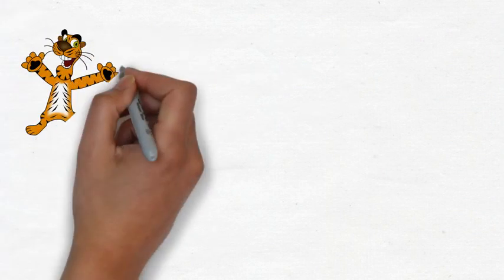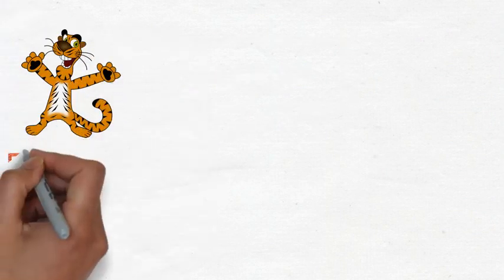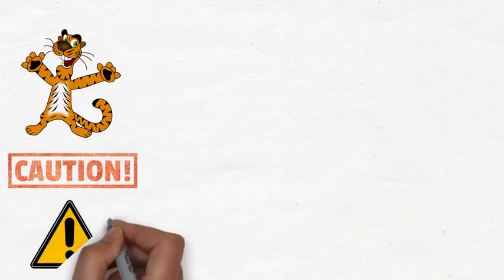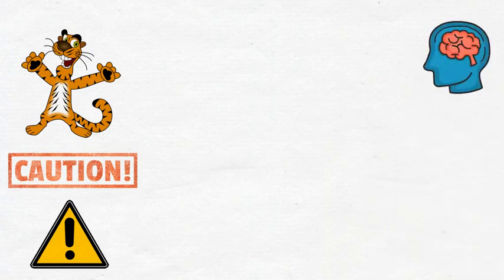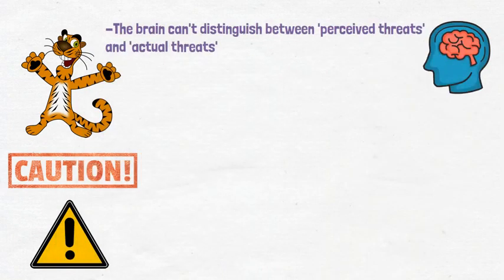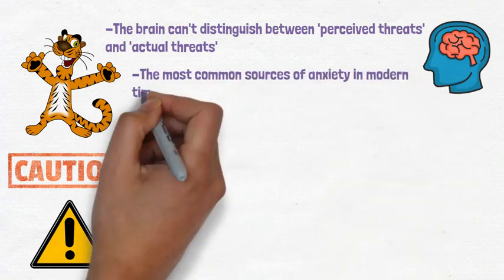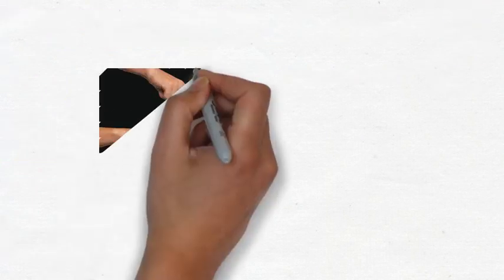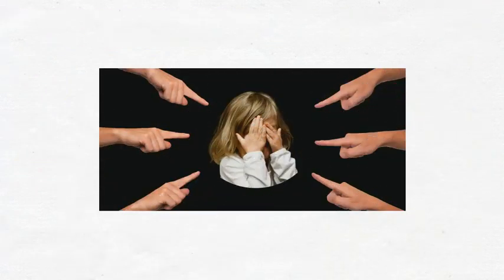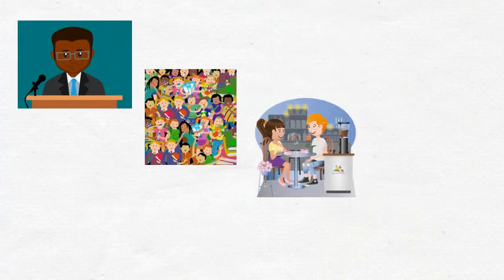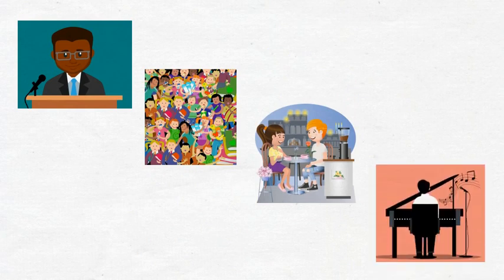While this anxiety response was initially developed to combat survival threats, in modern times, we experience this exact same stress response in relation to all threats. This is because our brain is very bad at differentiating between perceived threats and actual threats. In modern times, the main sources of our anxiety relate to social threats—the fear of other people's opinion and the prospect of social rejection. This is why things such as public speaking and going to social events where you don't know anyone, and dating and performance-based tests tend to make a lot of us very anxious.